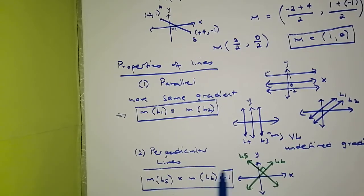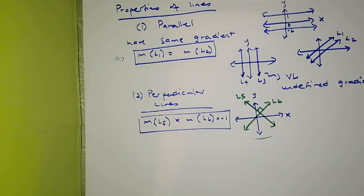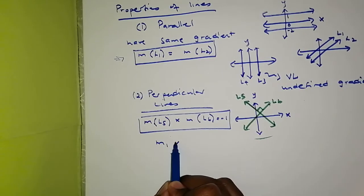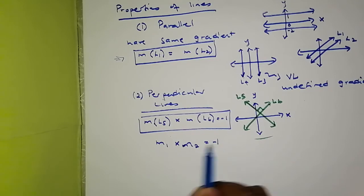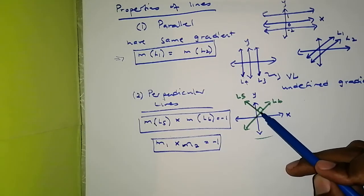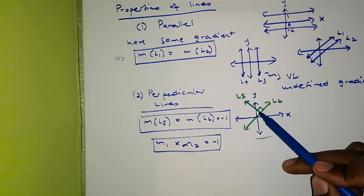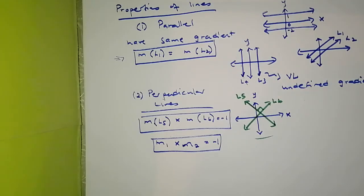This is the rule for perpendicular lines: if two lines are perpendicular, then m1 × m2 = −1. Whenever they tell you two lines are perpendicular to each other, that means those lines intersect where the angle is 90 degrees, and the product of their gradients is negative one.